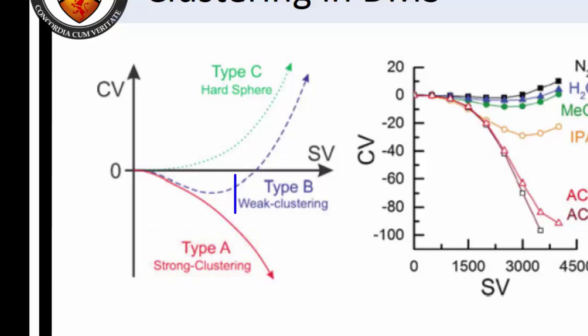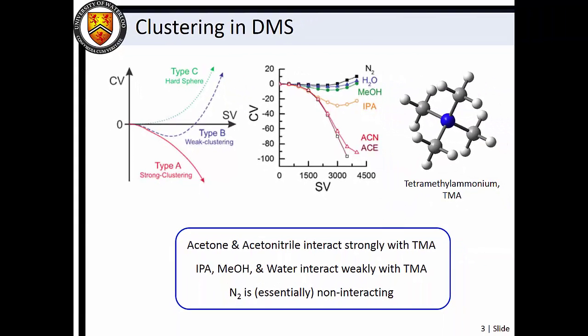Introducing a vapor from a solvent that interacts weakly with the cation yields a dispersion curve that initially shows negative CV deflection with increasing SV, but which reaches a CV minimum and then reverses direction.